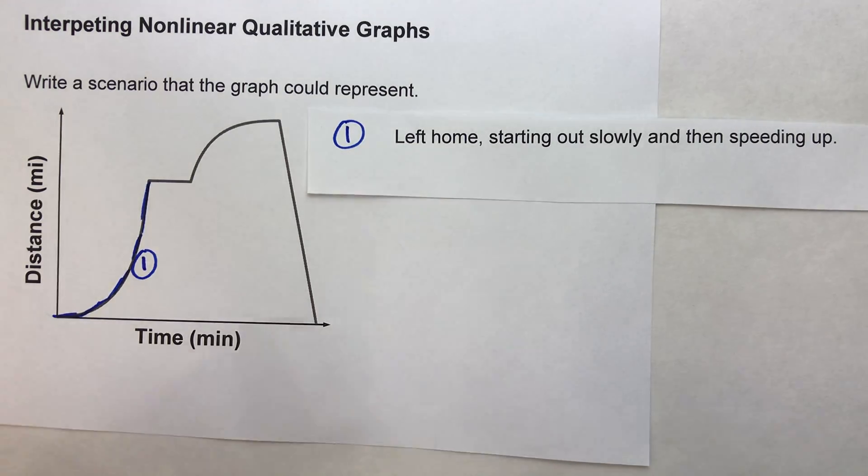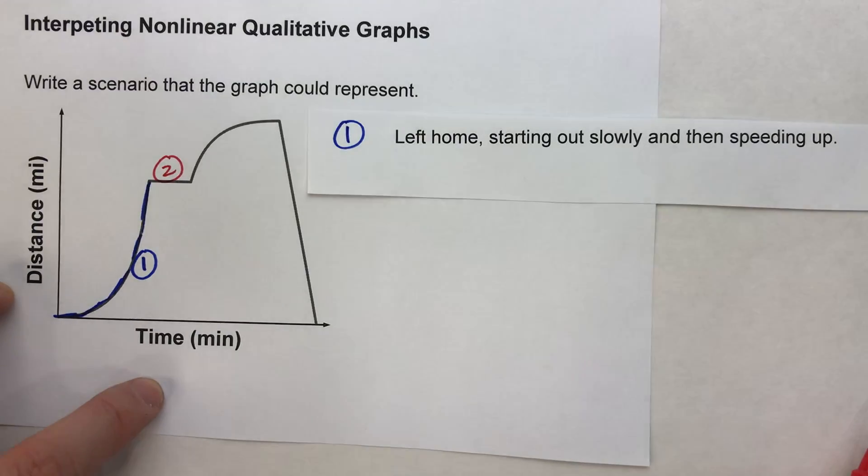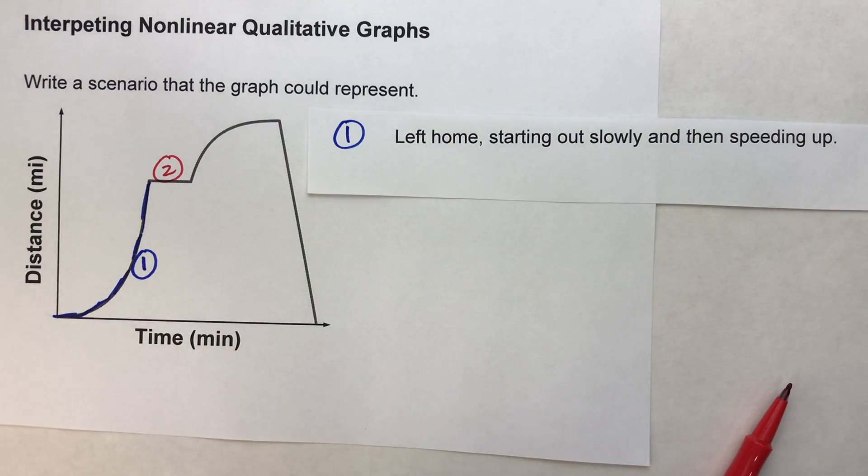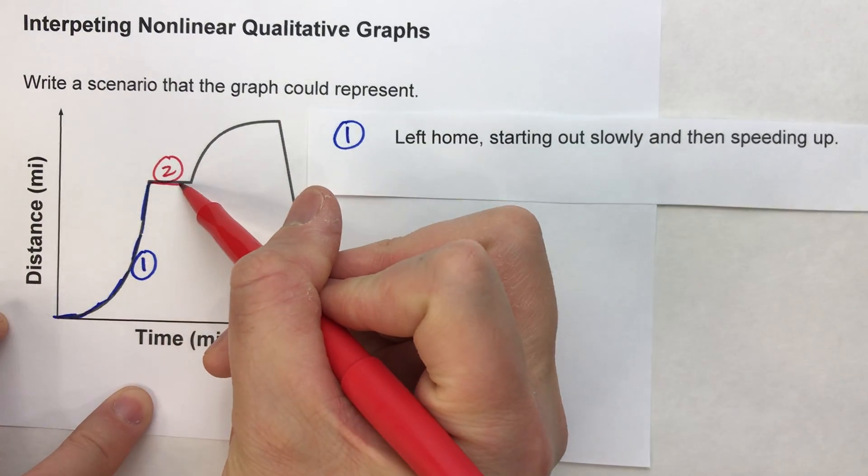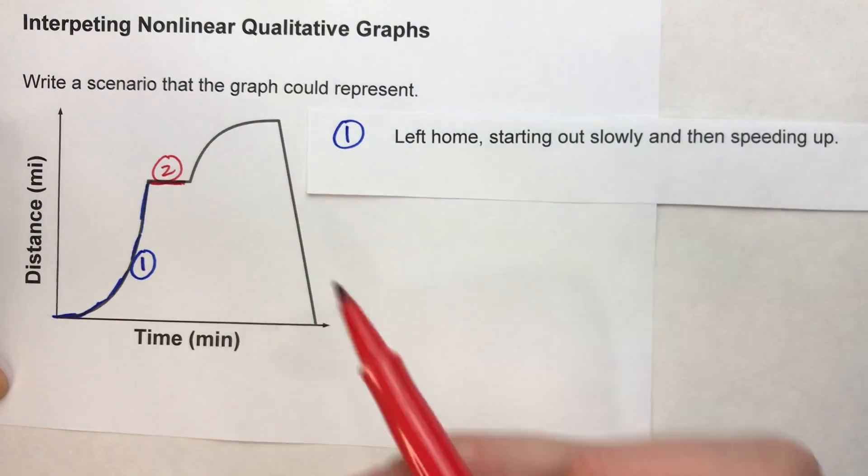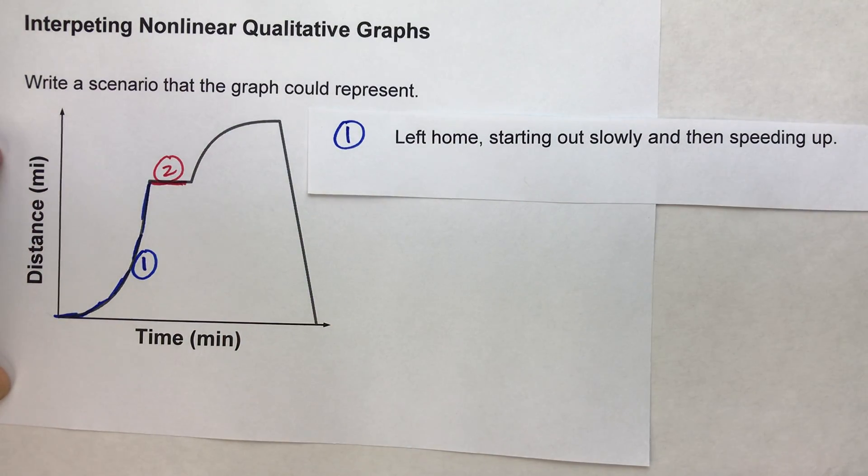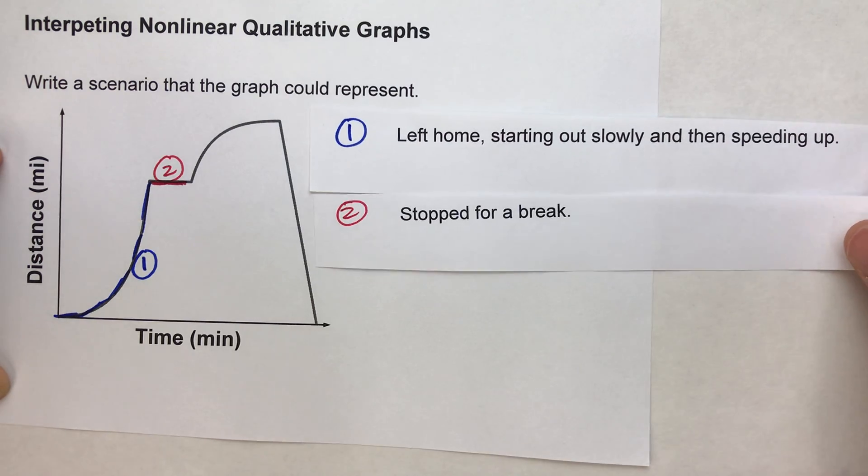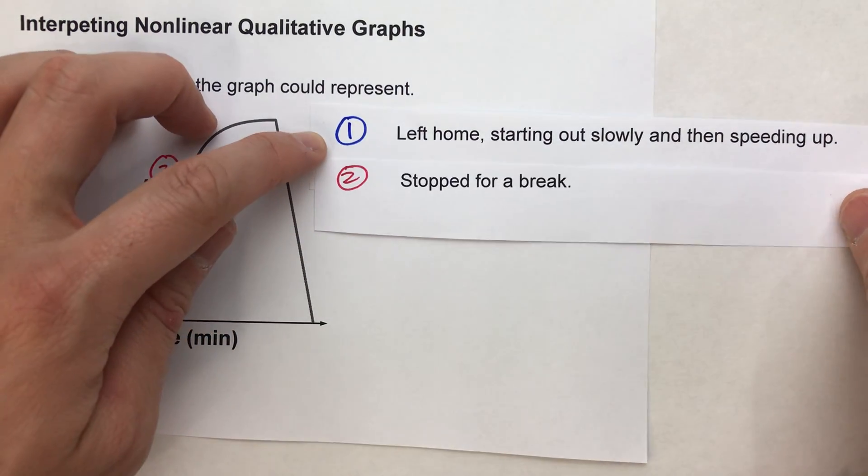That leads us to the second interval right here. And at that second interval, notice this is a flat line. This is a constant interval. The distance is neither increasing nor decreasing. So in this case, we've stopped making progress. Or in other words, maybe we stopped and took a break.